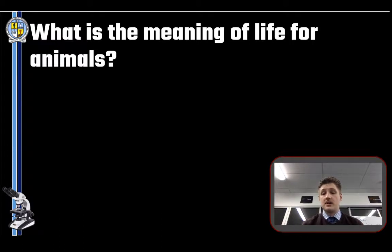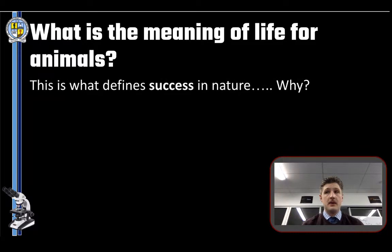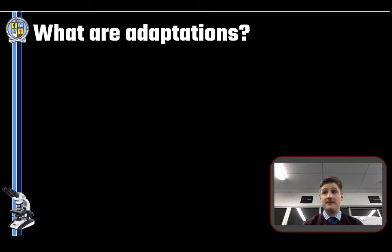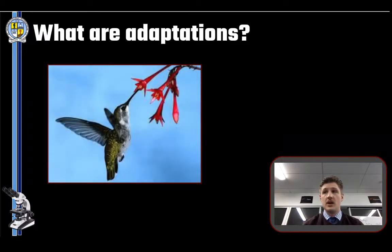Something that will make it survive more, and something that will make it able to pass on its genetic material to further generations — that is what defines success. Adaptations are inherited characteristics that help an organism to survive long enough to reproduce more successfully in its changing environment. That changing environment is really important, and adaptations can either be structural, behavioral, or physiological.